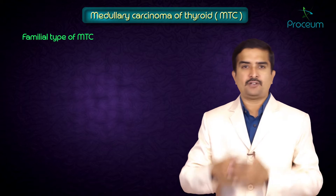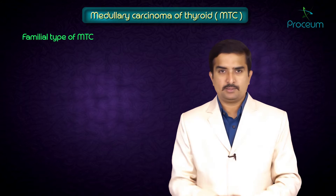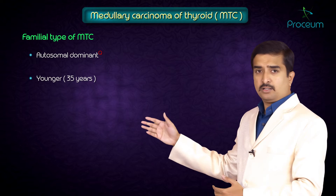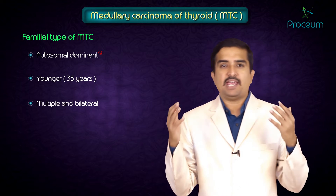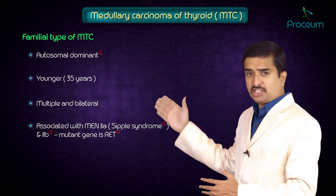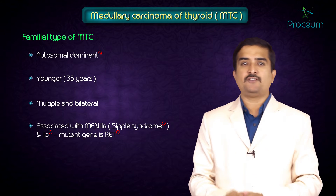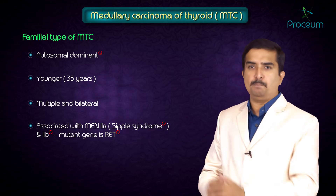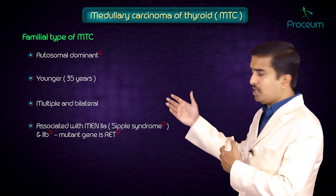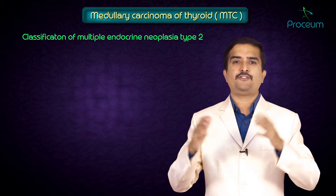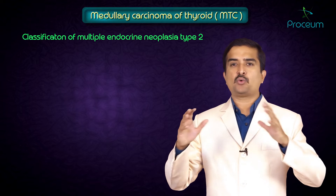The familial type is autosomal dominant. The approximate age of presentation is 35 years, and tumors are multiple and often bilateral. The familial type is typically associated with MEN2A (multiple endocrine neoplasia type 2A), also called Sipple syndrome, and MEN2B, where the mutant gene is the RET gene.